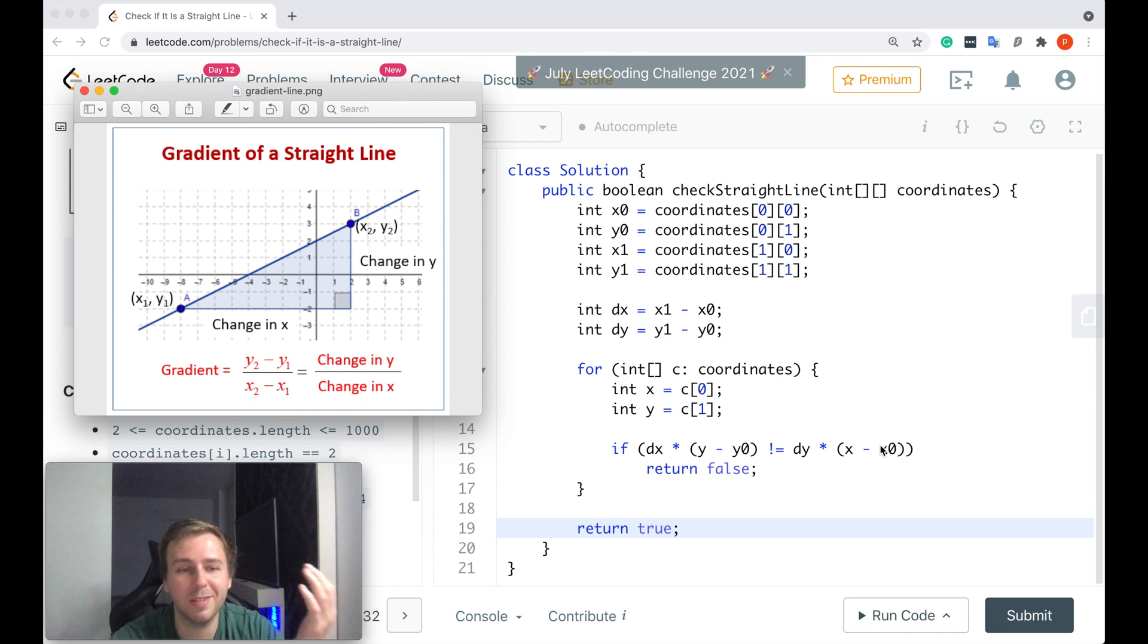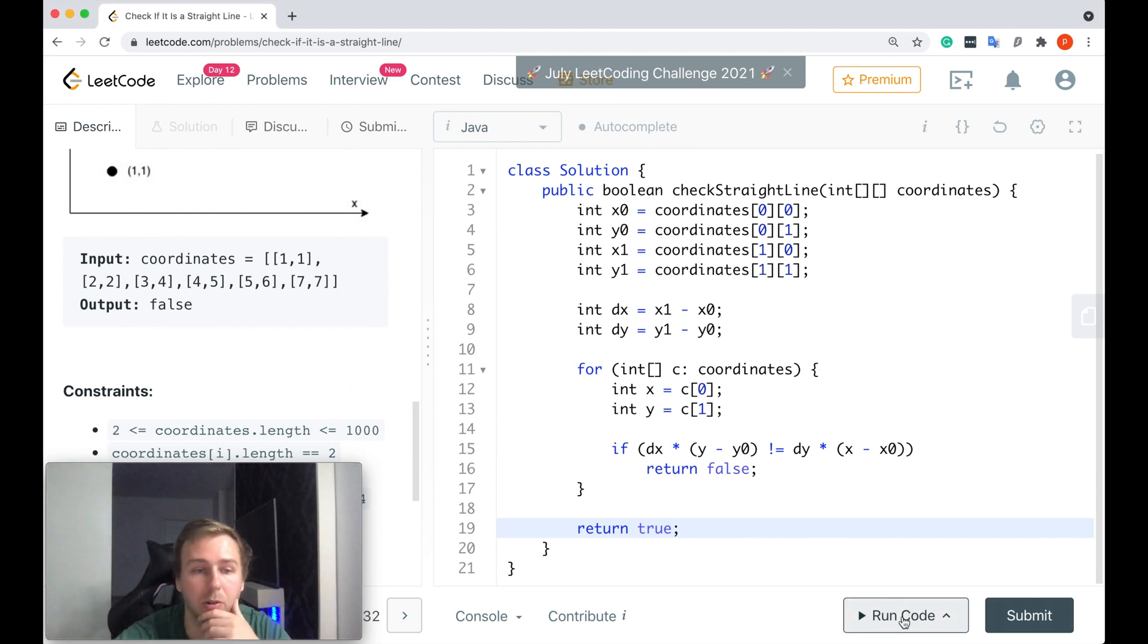And if it's not equal to the initial change in y multiplied by the current x minus the first x value from the coordinates array - if these two parts are the same we would continue, if not we would return false because it means it's not a straight line. Simply as that. I hope it's clear guys, let me just run the code now.